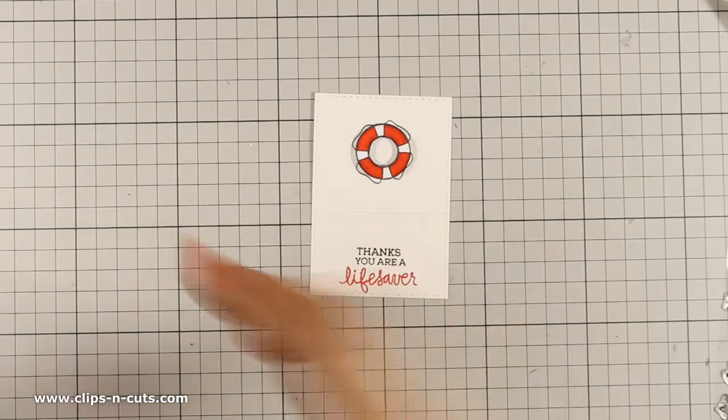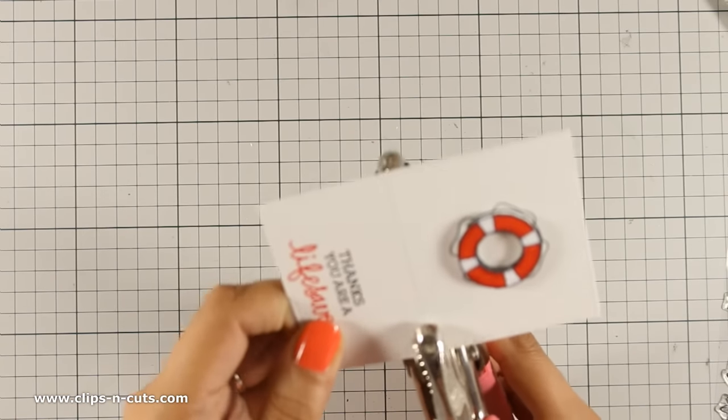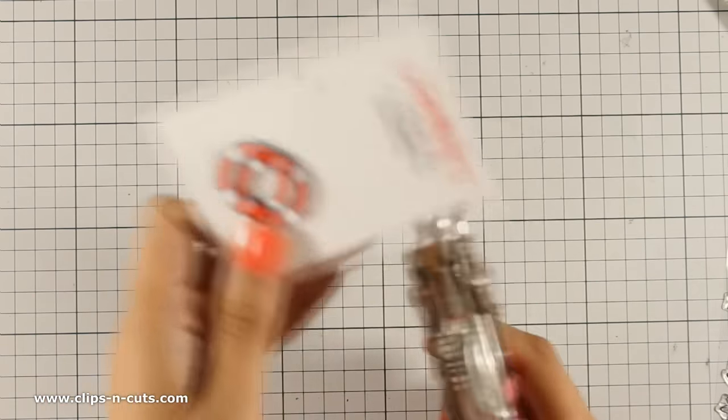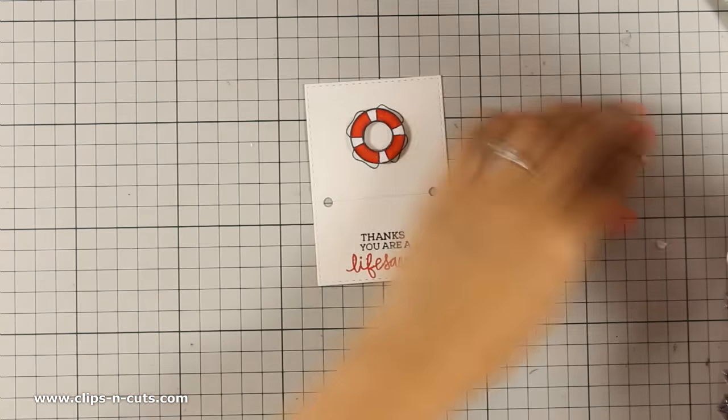So now I am going to add the touch of gold and the thread and that's why I have marked with the pencil where I want to make some holes. So I am using my crop-a-dile here so I can attach a couple of gold eyelets.